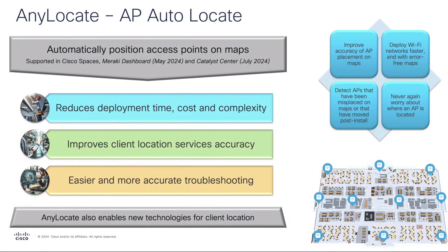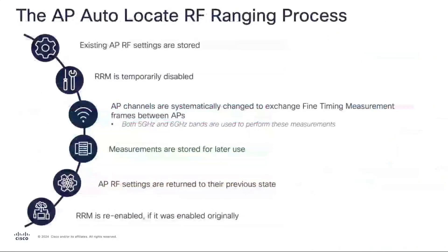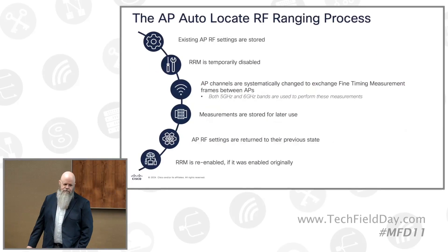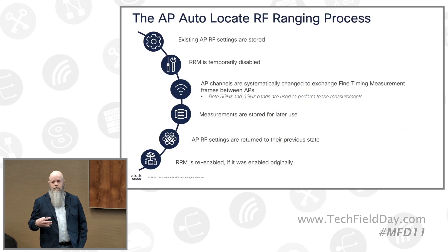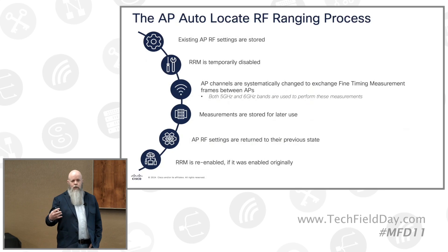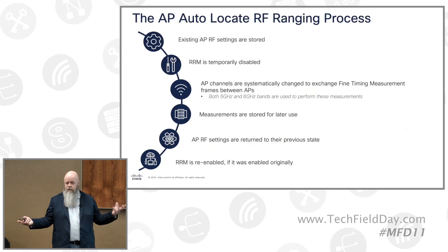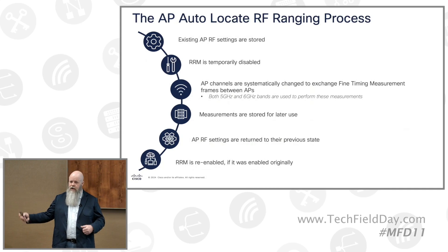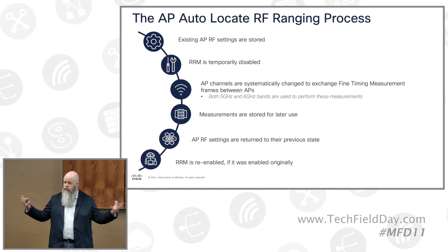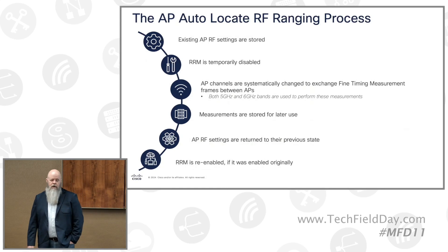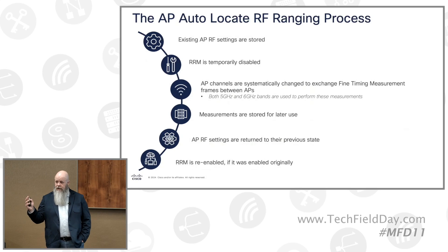This is going to help both Greenfield and Brownfield scenarios, and it also enables some new client technology location. If your access points are GPS capable, it will gather GPS data over a 24-hour period, aggregate it, and combine information from multiple APs — APs on one side of the building and APs on the other side will share their information to help place those APs.